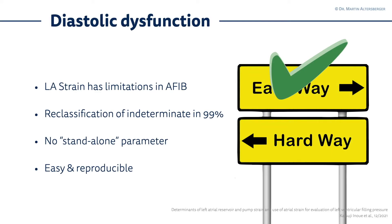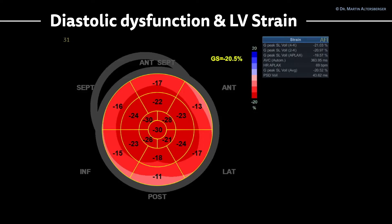In the previous lectures we discussed several measurements and included left atrial strain imaging in patients in indeterminate situations. We also covered diastolic dysfunction and left ventricular strain. In this lecture we will discuss the importance of LV strain in diastolic dysfunction. In this first image we have a patient with a reduction in basal strain but overall a normal global longitudinal strain.